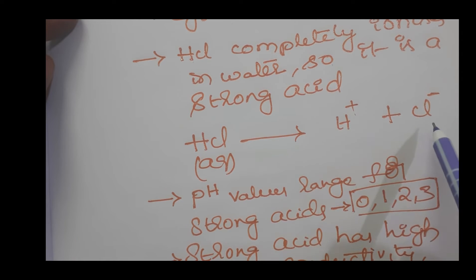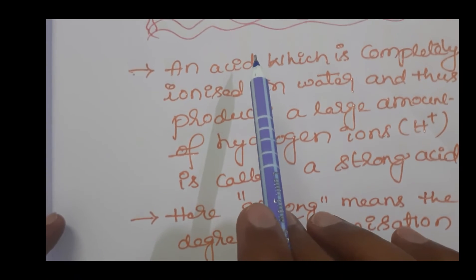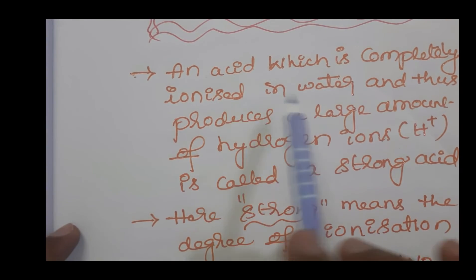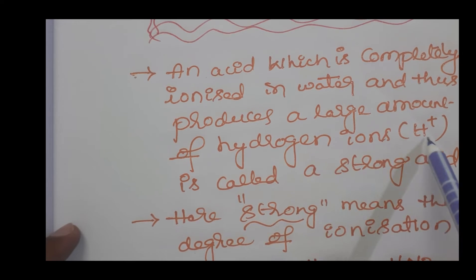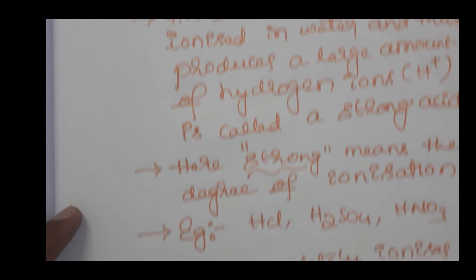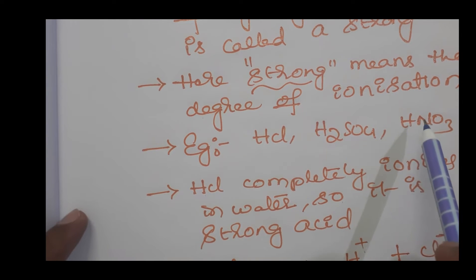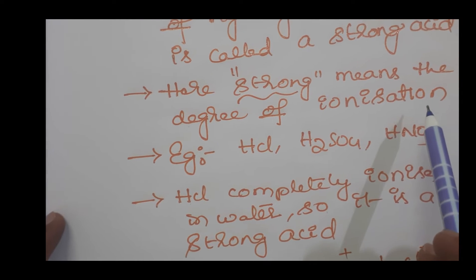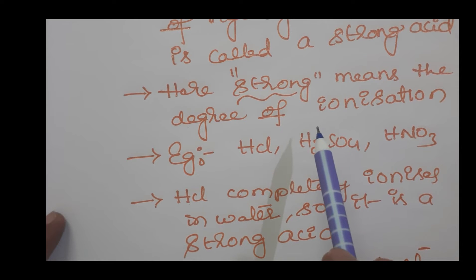An acid which is completely ionized in water and produces a large amount of hydrogen ions is called a strong acid. 'Strong' refers to the degree of ionization - to what level the given acid is ionized. If it is ionized 100%, we call it a strong acid. If it ionizes less than 100%, it is called a weak acid.